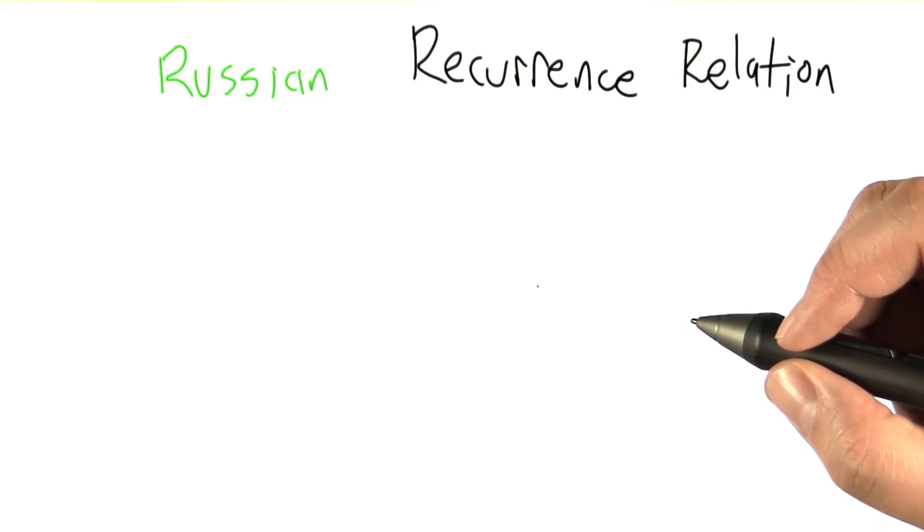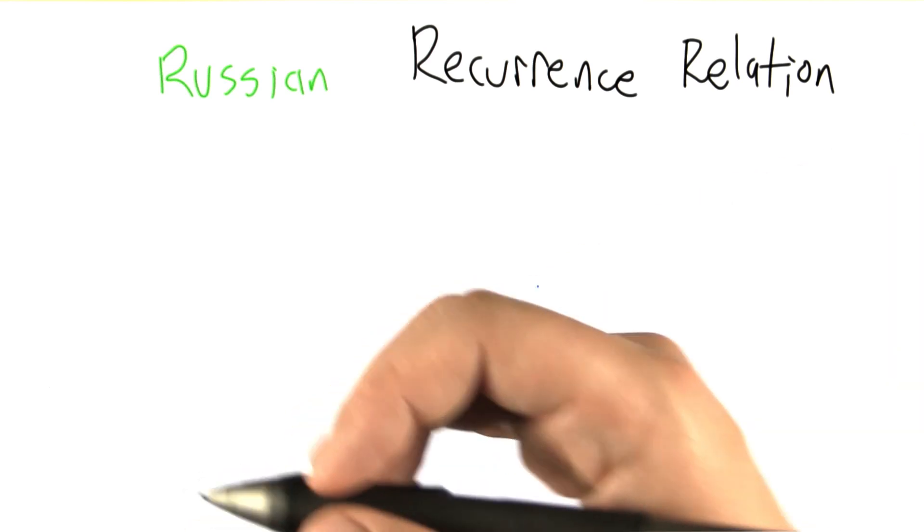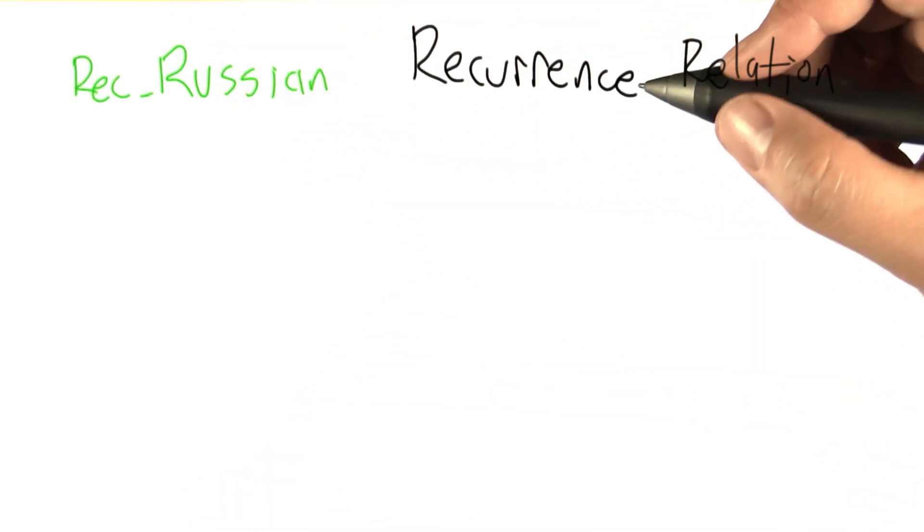What we're going to write now is a recurrence relation, which is a kind of recursive mathematical function, which is a good match for this recursive algorithmic expression for rec-Russian, so rec-Russian recurrence relation.